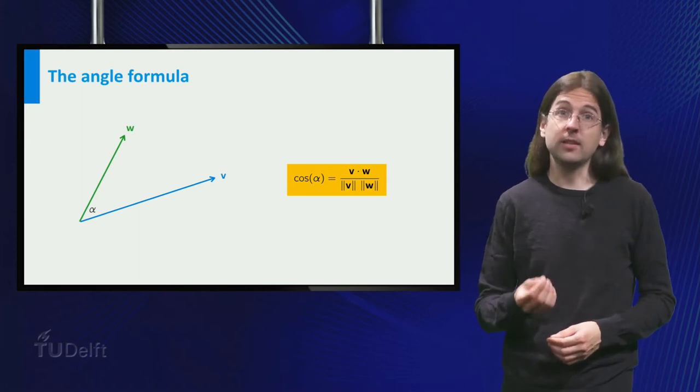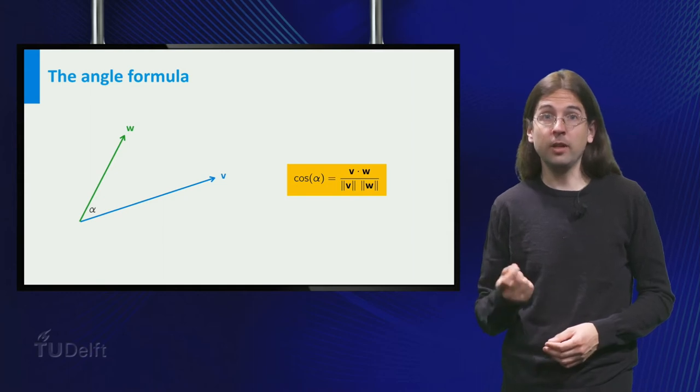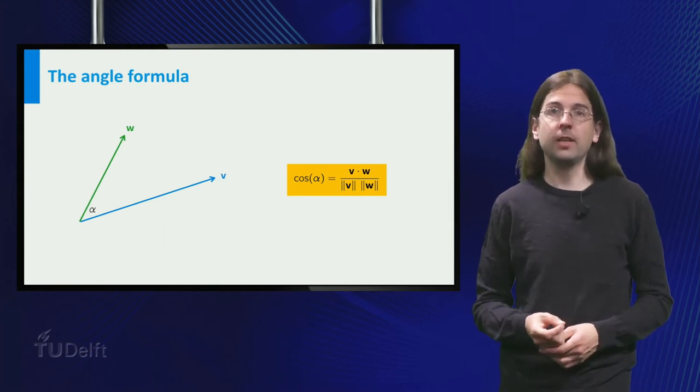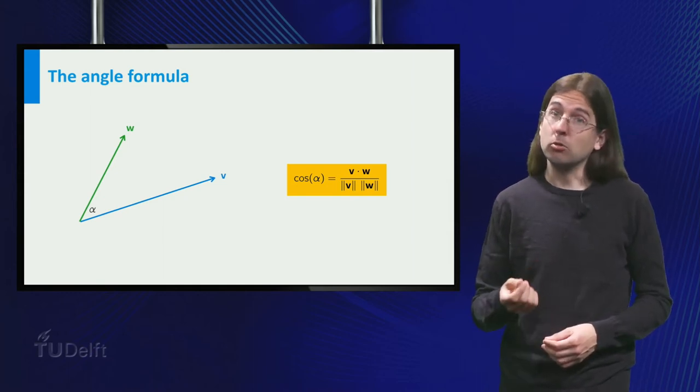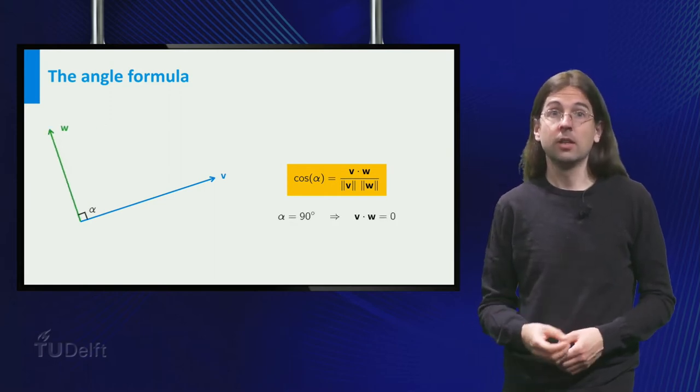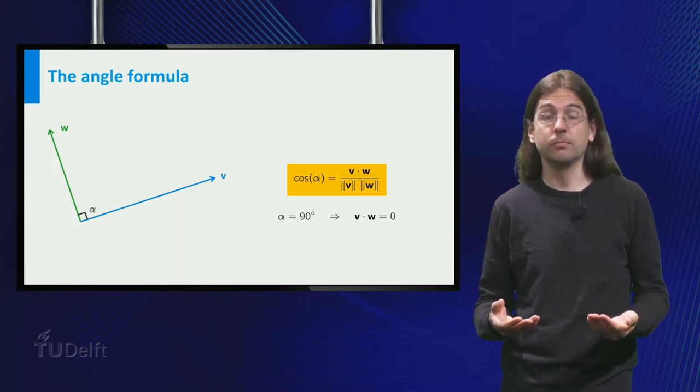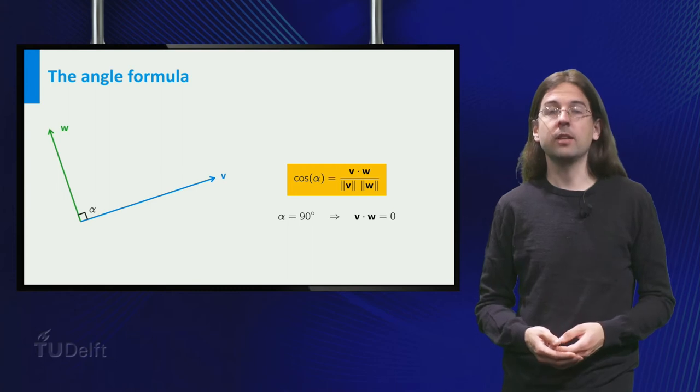The angle formula says that the cosine of the angle between two vectors equals their dot product over the product of their lengths. You already know that the straight angle corresponds to a zero dot product, which in the formula gives the cosine of the angle equals zero. So the angle is indeed 90 degrees.